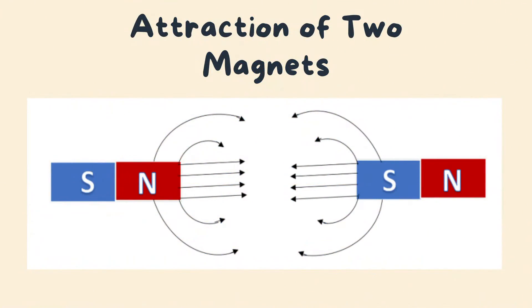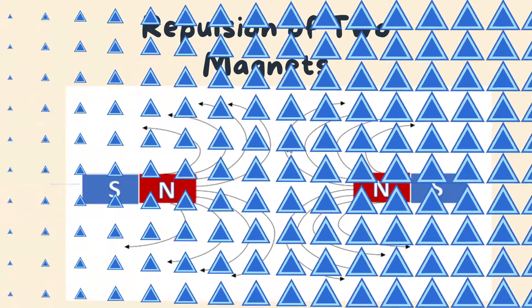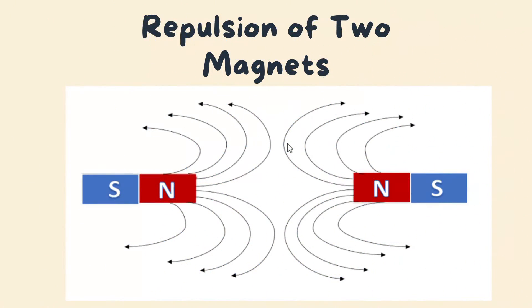This illustration shows the attraction of two magnets. While this picture illustrates the repulsion of two magnets.